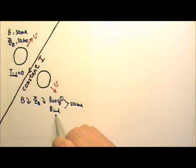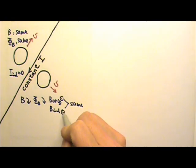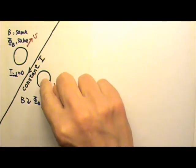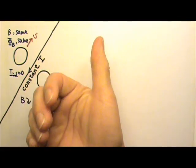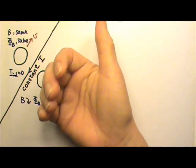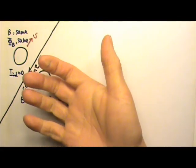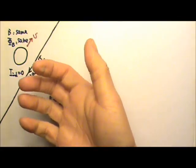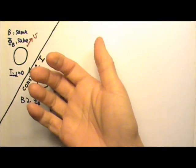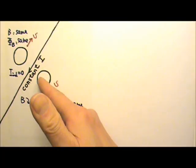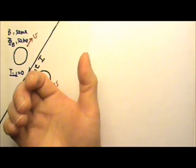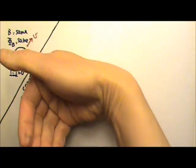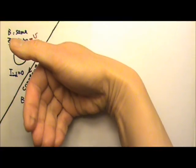That means the induced current magnetic field should also come out of the paper. Using the right-hand rule, I need my four fingers to point out of the paper inside the wire loop. That means the current must flow counterclockwise.